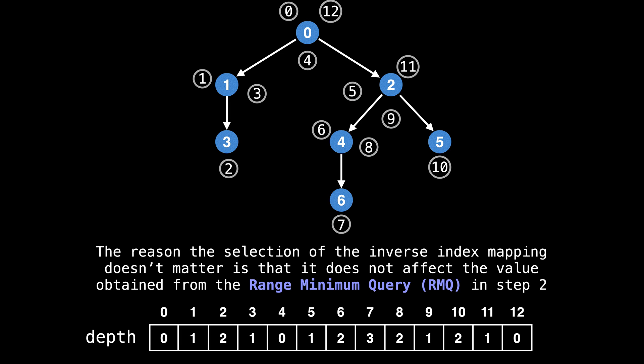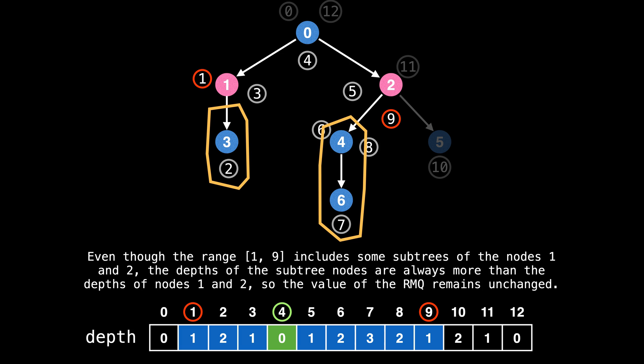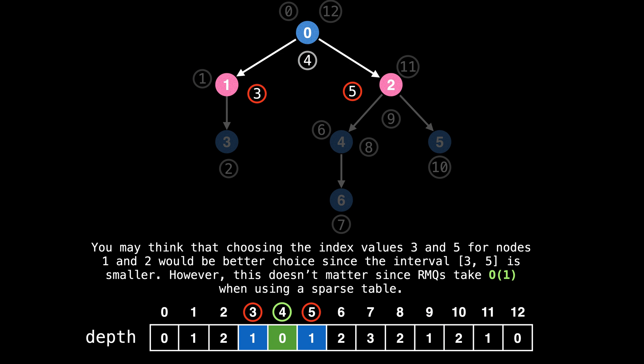However, in practice, I find that it's easiest to select the last encountered index while doing the Eulerian tour. The reason the selection of the inverse index mapping doesn't matter is that it doesn't affect the value obtained from the range minimum query in step two. Suppose that for the lowest common ancestor query of nodes one and two, we were to select index one for node one and index nine for node two, meaning the range between one and nine in the depth array when we're doing the range minimum query. Well, even though the range one to nine includes some nodes from the subtrees of nodes one and two, the depth of the nodes in those subtrees are always more than the depth of the nodes one and two. So the value of the range minimum query remains unchanged. You may think that querying a smaller interval would be faster, but we're going to be using a sparse table to do the minimum range query under the hood. So the time complexity remains constant either way.